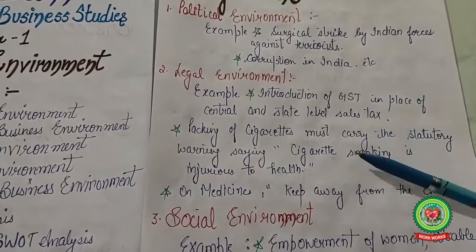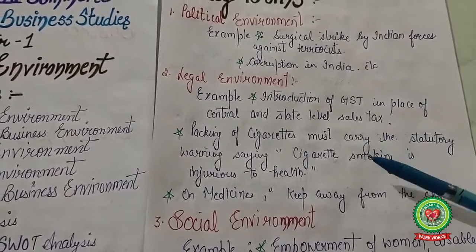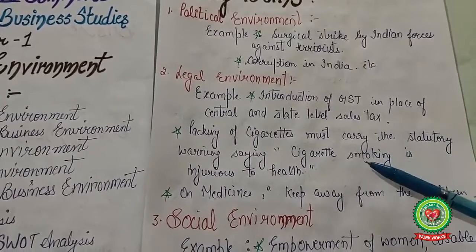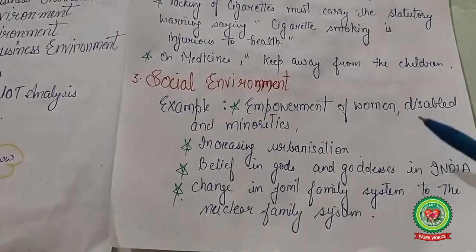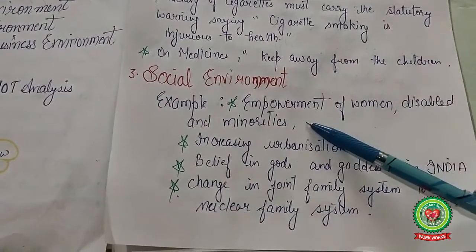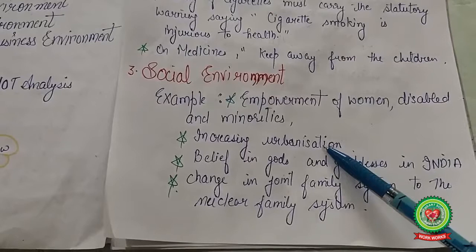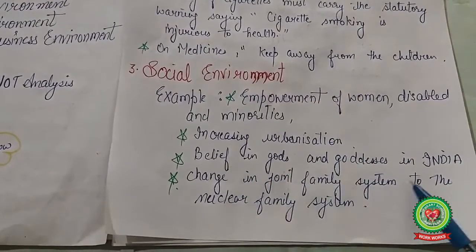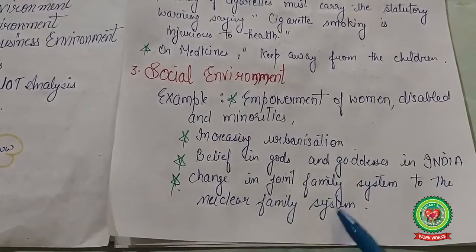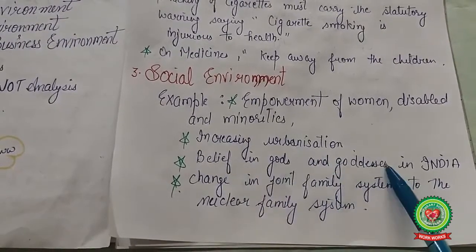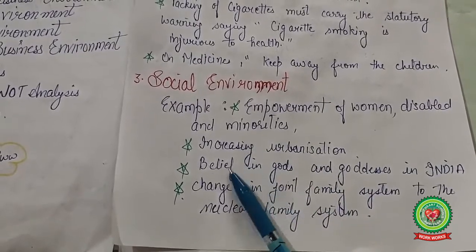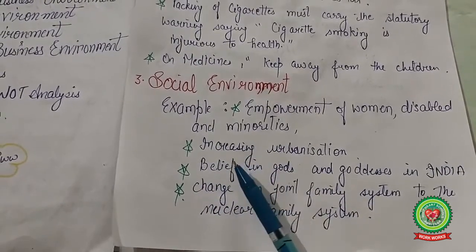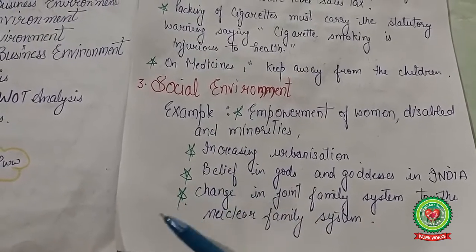The legal environment shows how legal policies and procedures affect business enterprises. Next is the social environment — for example, empowerment of women, disabled persons and minorities, increasing urbanization, the shift from joint family to nuclear family systems, and beliefs in gods in India. These show how society and its beliefs affect the working of a business enterprise.